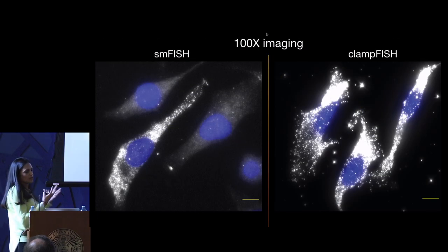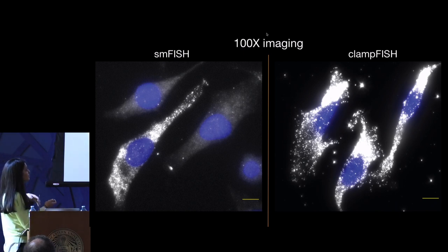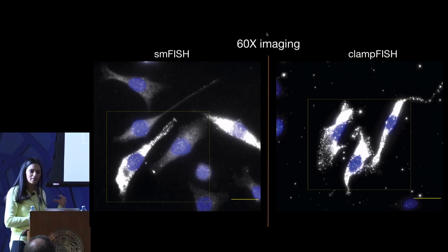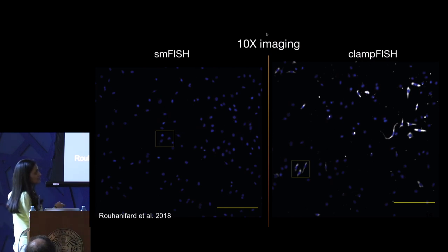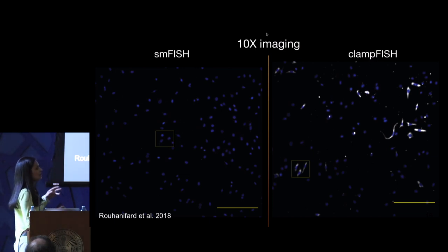When you're zoomed in at 100x magnification, you have very few cells in each microscope position. Here I'm showing 100x imaging — single molecule FISH on the left and ClampFISH on the right — both look pretty good. Likewise for 60x imaging. When you get down to 20x, where we have a lot more cells represented, you're starting to lose signal on single molecule FISH, but you can still see where the ClampFISH signal is. And at 10x imaging, when we see a lot more cells, our sampling efficiency is much higher — you can still detect which cells are positive and which are negative by ClampFISH.